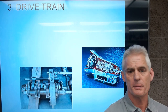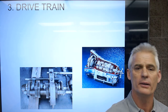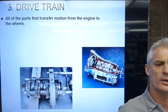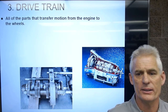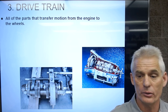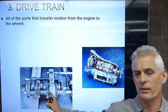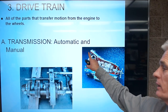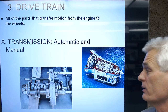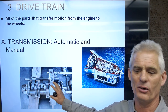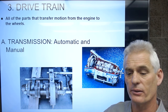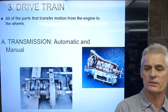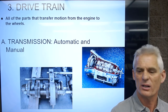The third main category of a vehicle is the drivetrain. The drivetrain is all of those parts that transfer motion from the back of the engine all the way to the wheel. That includes a transmission — here's an automatic transmission and the innards of a manual transmission. Transmissions can be automatic or manual. In our chassis and drivetrain systems classes, we look at both transmissions in depth, talk about them, service them, and all those kinds of things.